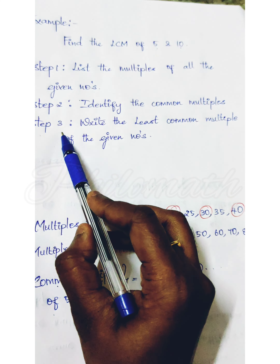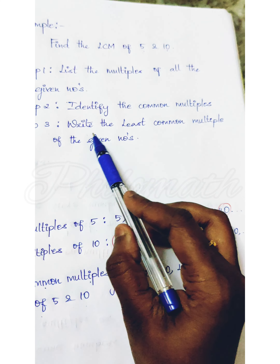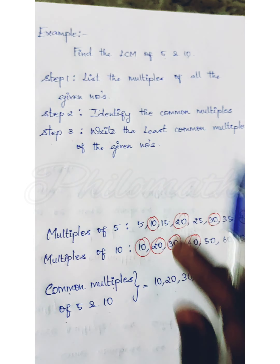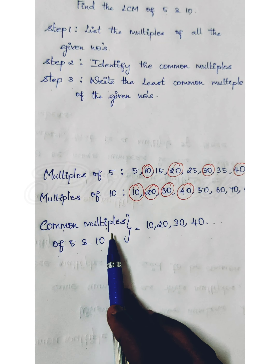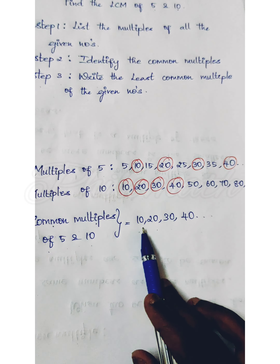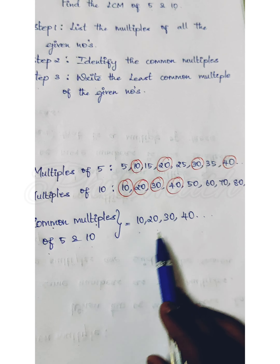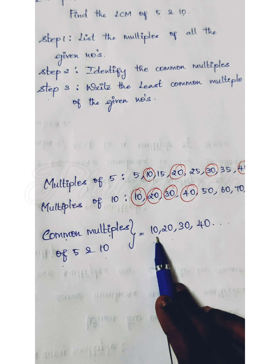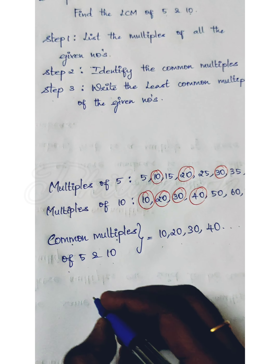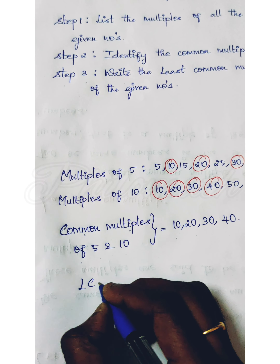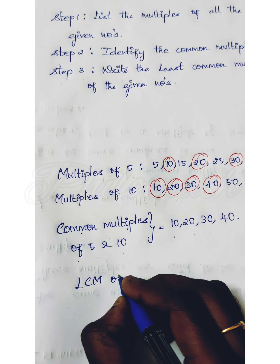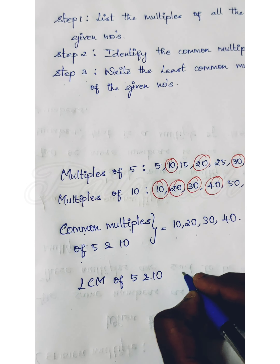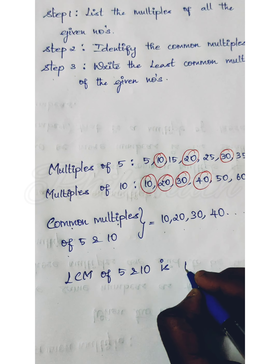Step three: write the least common multiple of the given numbers. In the common multiples — 10, 20, 30, 40 — what is the least? It's 10. So the LCM of 5 and 10 is 10.